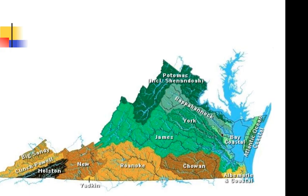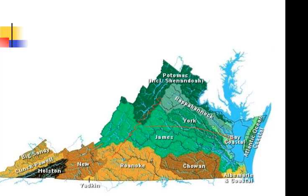We have the York River watershed, and the Rappahannock above us. If you live in the Tappahannock area, you might be in the Rappahannock watershed; Charles City is in the James River watershed. Right around the Appalachian Mountains, everything on the eastern side flows into the Chesapeake Bay. Everything in the south flows into the North Carolina Sounds — the Chowan and the Roanoke — and everything west of the Appalachians flows into the Mississippi River and eventually the Gulf of Mexico.